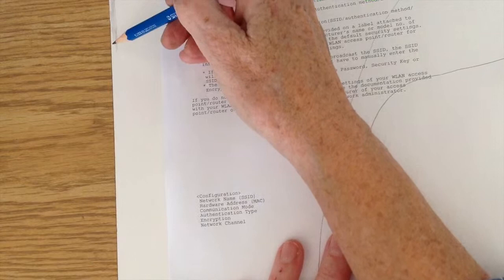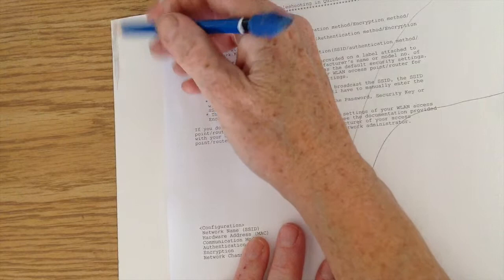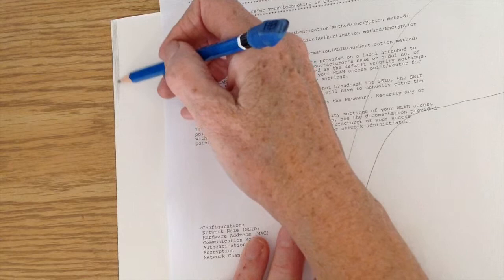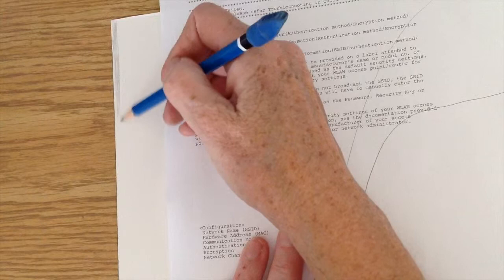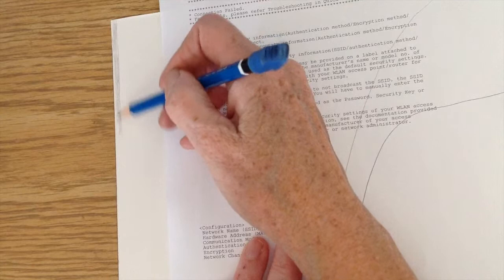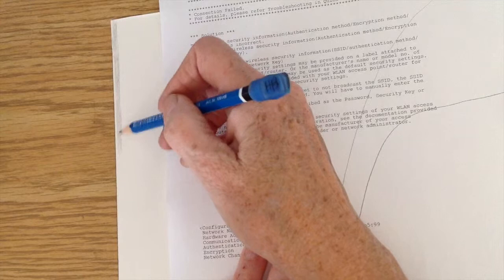As I'm stroking, I'm turning my pencil every maybe 10 or 12 strokes. This helps to keep a sharp point because you're sort of sharpening your pencil on the paper as you go.